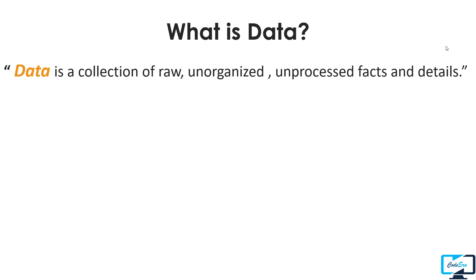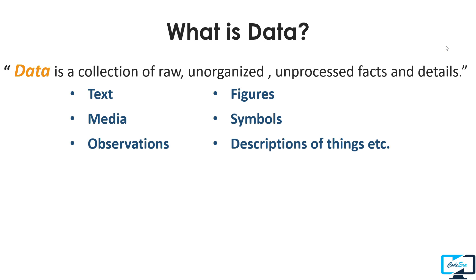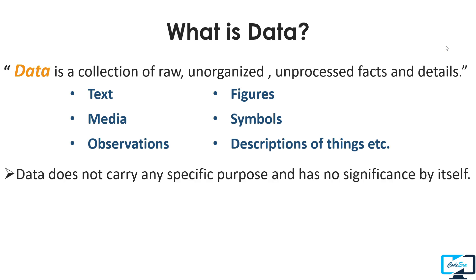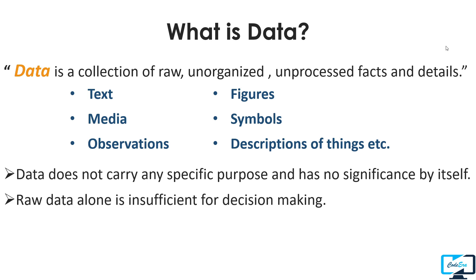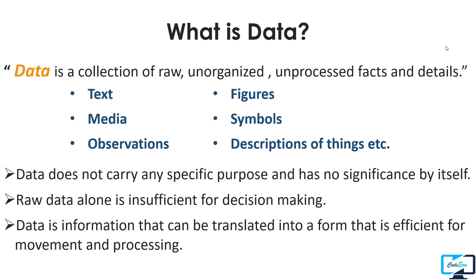Text, any type of media, figures, symbols, etc. are examples of data. Data itself has no importance because with raw data alone we can't make any decision. Raw data is of no use, but we can translate that data into an efficient form so that we can use it for processing.